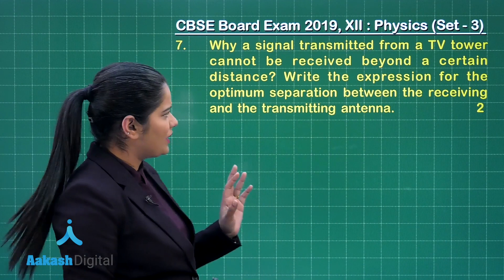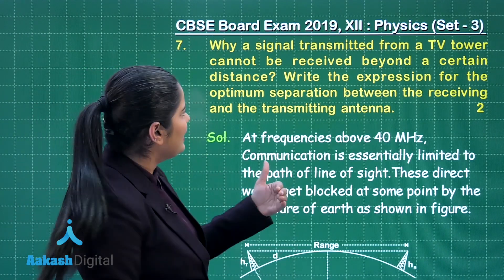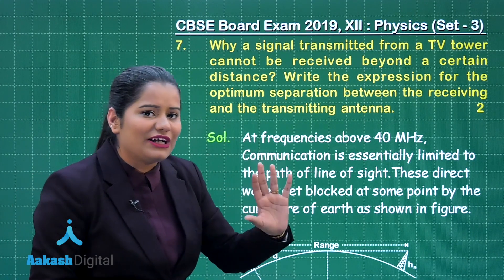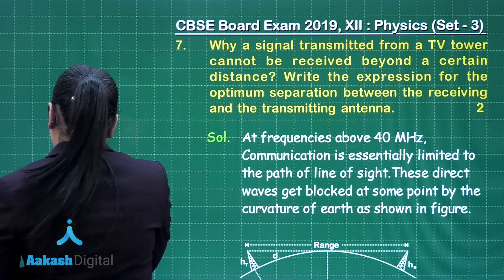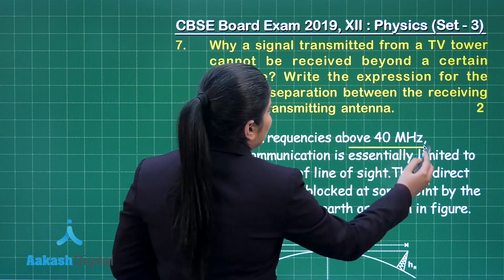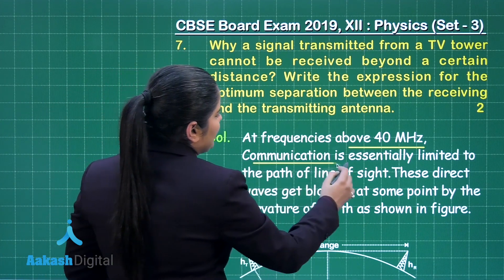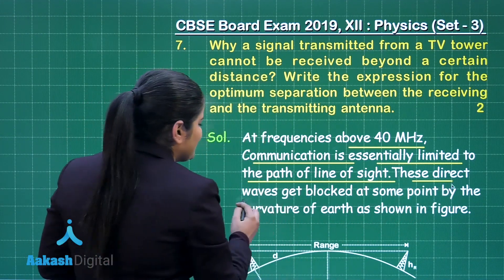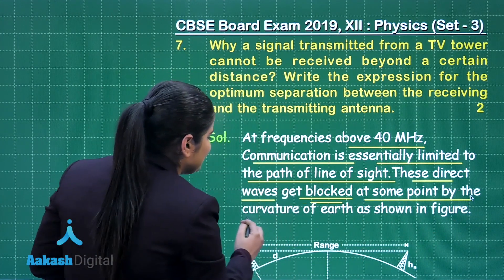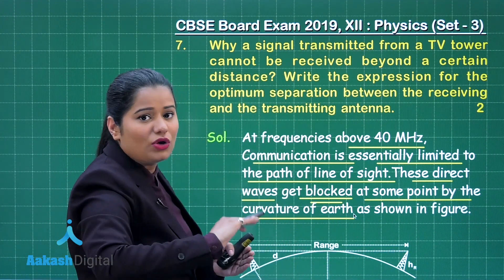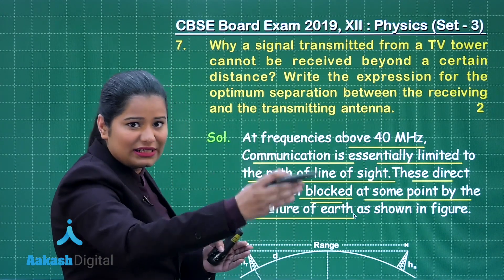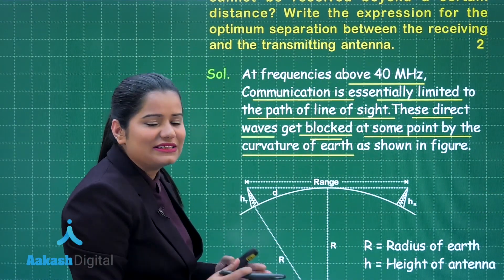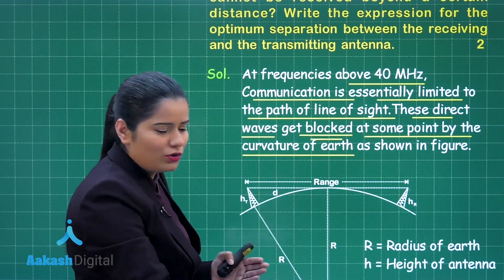First, you need to explain why the signal transmitted from a TV tower cannot be received beyond a certain distance. At frequencies above 40 megahertz, communication is essentially limited to the line of sight path. These direct waves get blocked at some point by the curvature of the Earth. Since the Earth is not flat — it has an elliptical shape — its curvature blocks these waves, which is why signals cannot be transmitted over longer distances.